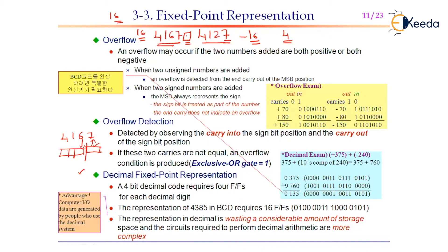This is why BCD is quite difficult to implement in a computer system. However, some designers prefer BCD because representing decimal digits in BCD is far easier than converting decimal to binary — in the real world we use the decimal number system, and converting from decimal to BCD is more straightforward. The drawback is that decimal fixed point representation wastes considerable storage space and the circuits required to perform decimal arithmetic are more complex.